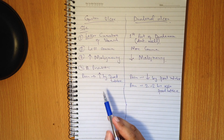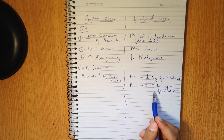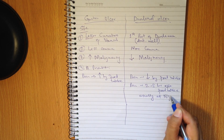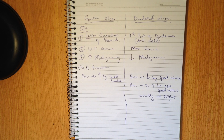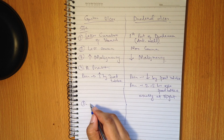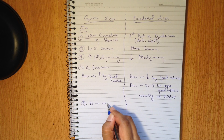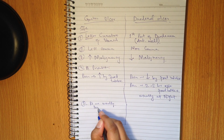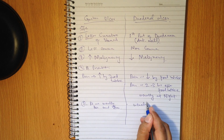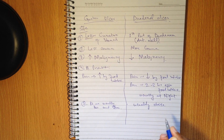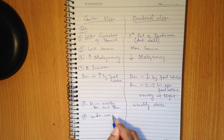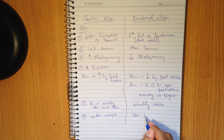In gastric ulcer, pain occurs shortly after food intake, but in duodenal ulcer the pain occurs 2 to 3 hours after food intake — usually at night during sleeping time. Gastric ulcer patients are usually thin and slim, whereas duodenal ulcer patients are usually obese. So gastric ulcer patients are underweight and duodenal ulcer patients are overweight.